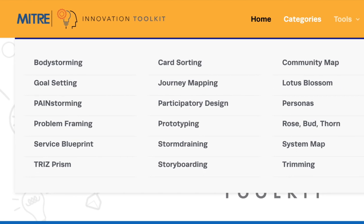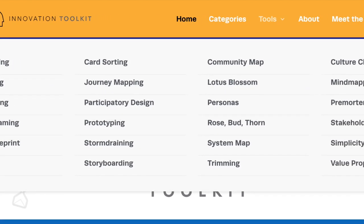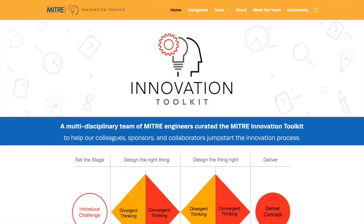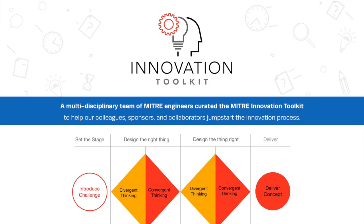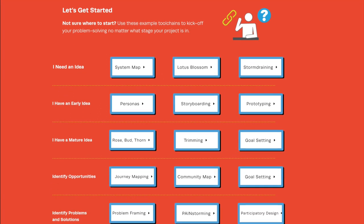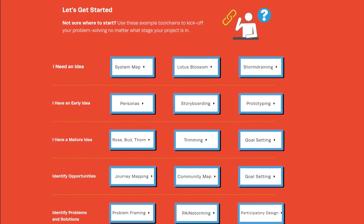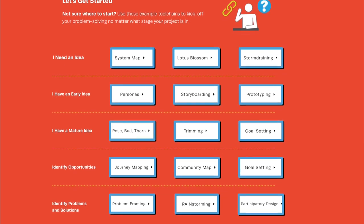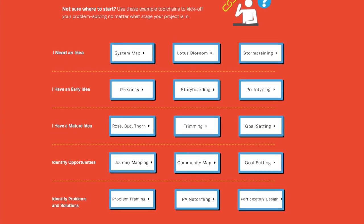Most tools also include a worksheet-style template that you can download and print. Picking the right tool for the job can be tricky, so we created several avenues that will help you find the right one. The homepage is a great place to start. There you will find hand-picked tools that are useful for each stage of innovation, when you need an innovative idea, already have an idea, or want to identify opportunities, problems, or solutions.